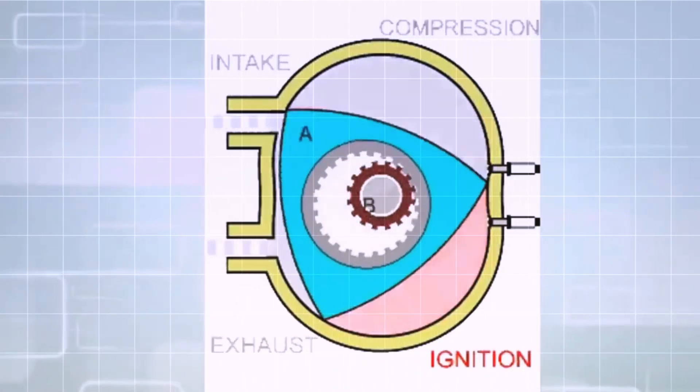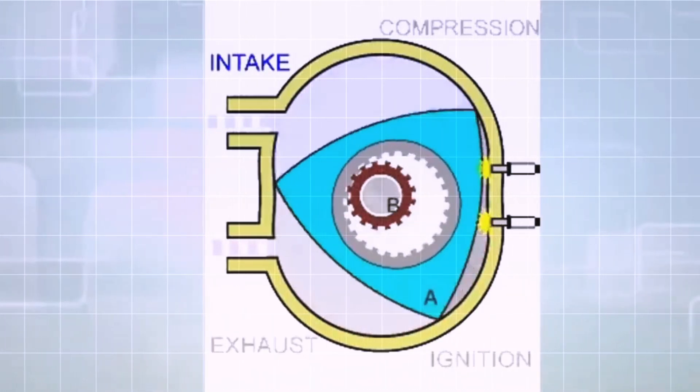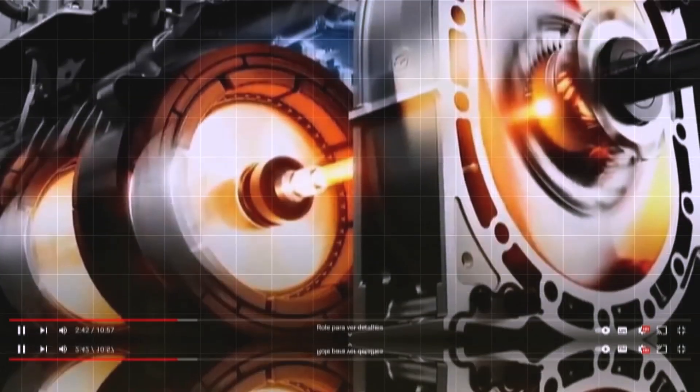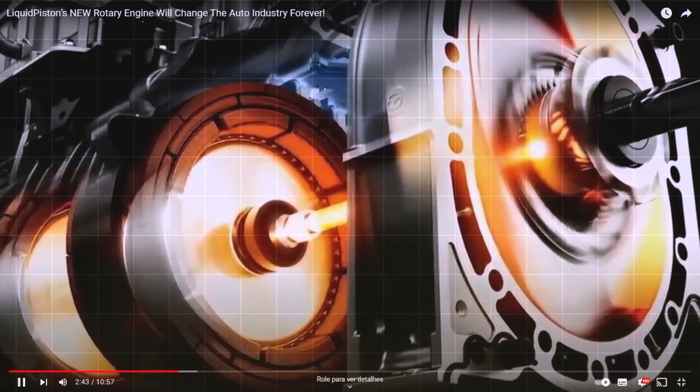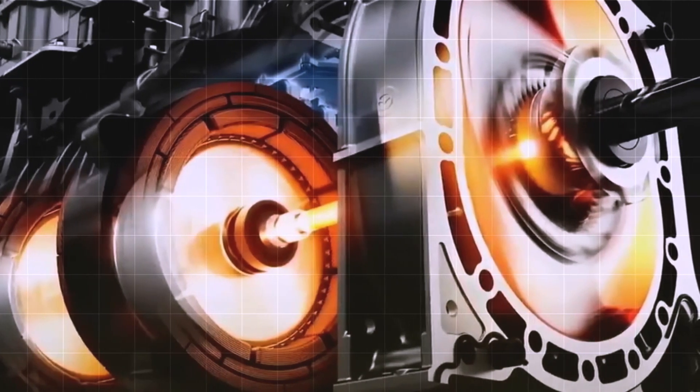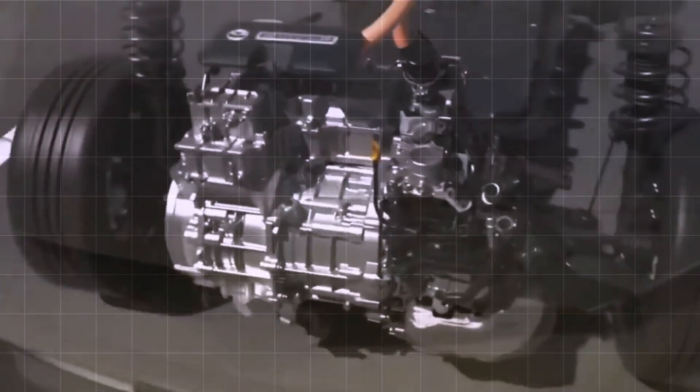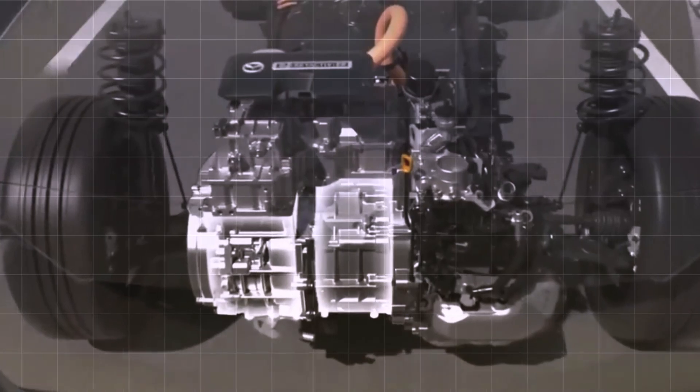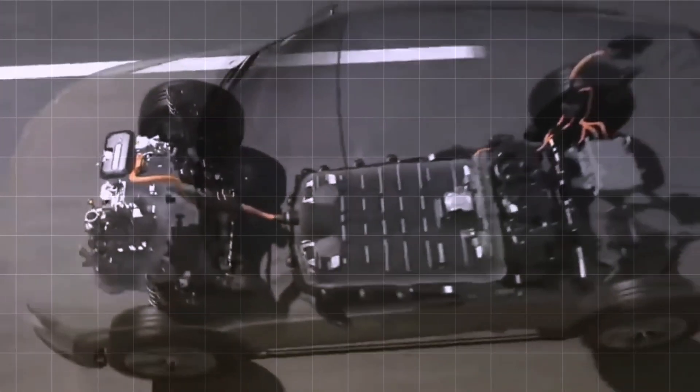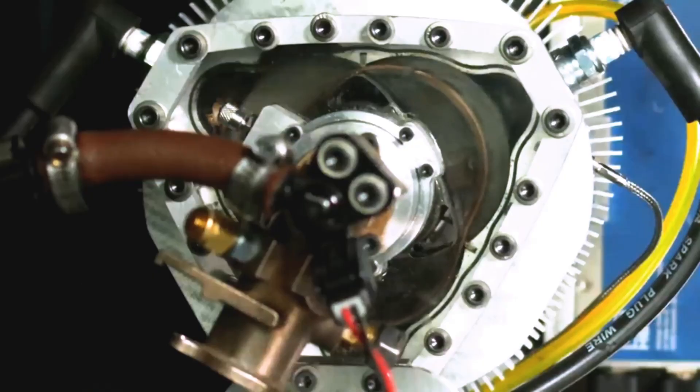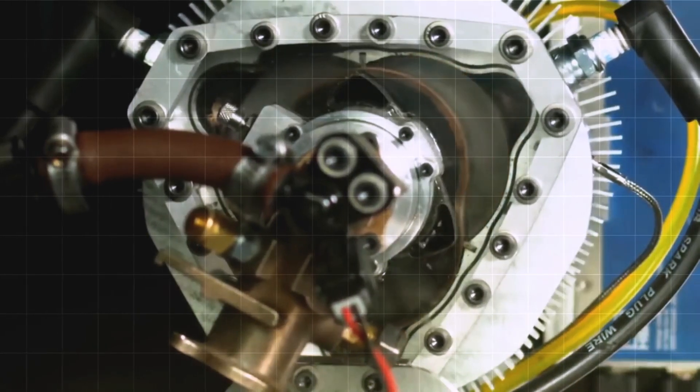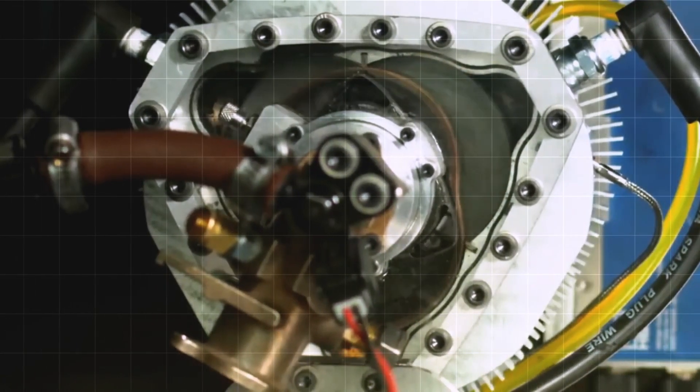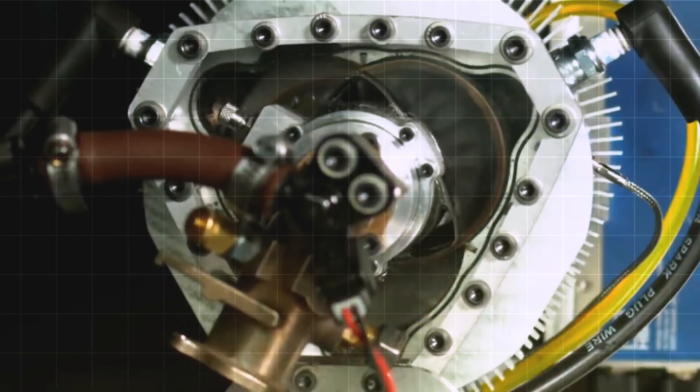The X-Engine enters the scene at a time when electric motors are rapidly gaining traction due to their zero tailpipe emissions. While electric vehicles offer a clear advantage in terms of emissions, they come with their own set of considerations. Recharging infrastructure is still evolving, and range anxiety remains a concern for some drivers. Additionally, the production of electric vehicle batteries can have environmental impacts. The X-Engine positions itself as a potential complement to electric vehicles, particularly in applications where range or rapid refueling is crucial.